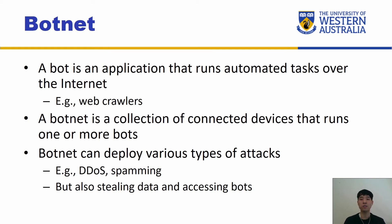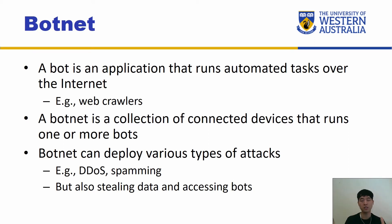A bot is an application that runs automated tasks over the internet — just a single system that does automated tasks, like a web crawler. A botnet is a collection of connected devices that runs one or more bots, short for bot network. Botnets can deploy various types of attacks, but the most common ones are denial of service attacks, distributed denial of service attacks, and spamming, but also stealing data and accessing bots.